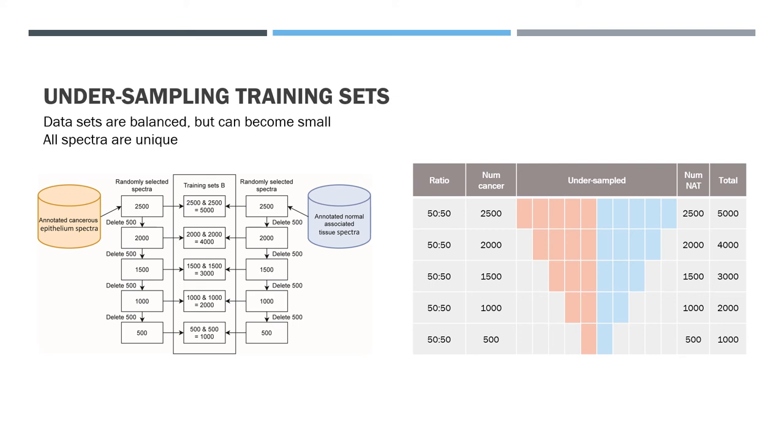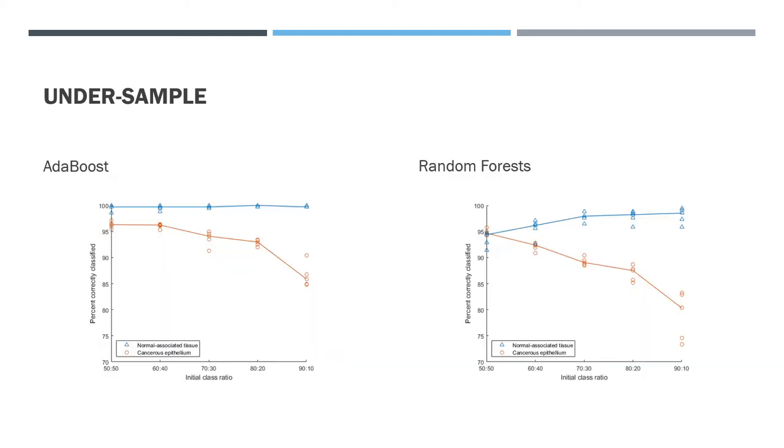So taking a closer view of the left-hand side of that plot, we generated some undersampled training data. Each of these training sets has the same number of cancer normal-associated spectra, but as the size of the minority class gets smaller, you can see we end up throwing away lots of the majority class to match. AdaBoost appears to outperform random forests, with the normal-associated tissue being almost perfectly classified for all sample sizes, although to be fair, they both do pretty well. The cancer samples do not perform quite as well, so more are being misclassified as the training sets get smaller. The variability in the random forest data is slightly larger too.